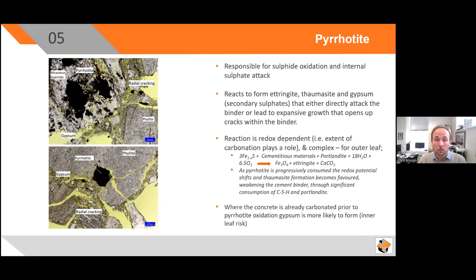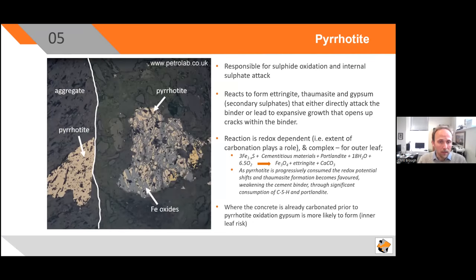There appears to be a slight difference between outer leaf and inner leaf with respect to the degree of carbonation and therefore the reaction occurring. It's possible — and we only have anecdotal information — that in the inner leaf, sulfate formation is favoured by gypsum. But this is still an expansive sulfate reaction and will still cause cracking within the concrete. There's a reflected light image here showing an example of oxidation of the pyrrhotite: on the left of the field of view, pyrrhotite in a beige-yellow colour is present within an aggregate and currently unreacted. Pyrrhotite within the binder, also beige-yellow, is showing substantial reaction to iron oxides in light grey, with some sulfate formation within the adjacent binder.